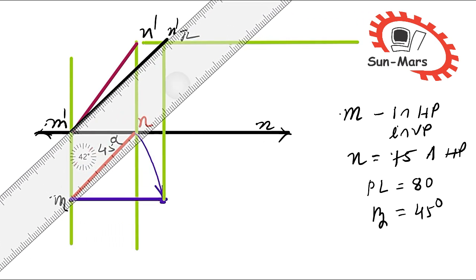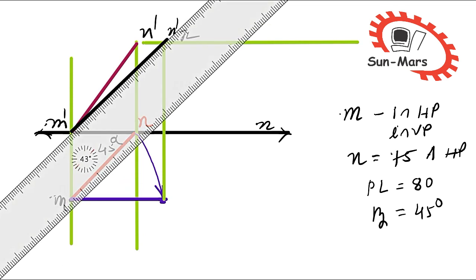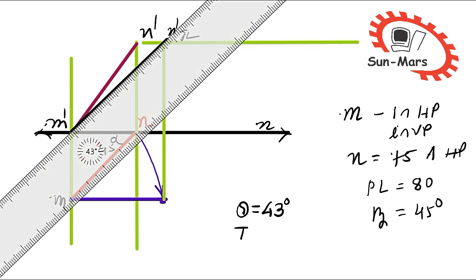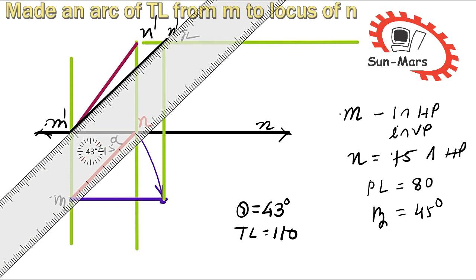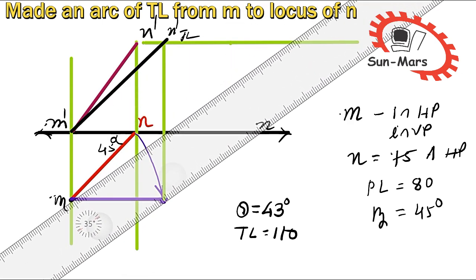Now this angle we had, friends, that is equal to theta, which is equal to 43 degrees. So one of my answers is theta is equal to 43 degrees. So true length we get here is 110. After that, this same length you have to take, 110, and we have to make an arc of 110 from here.